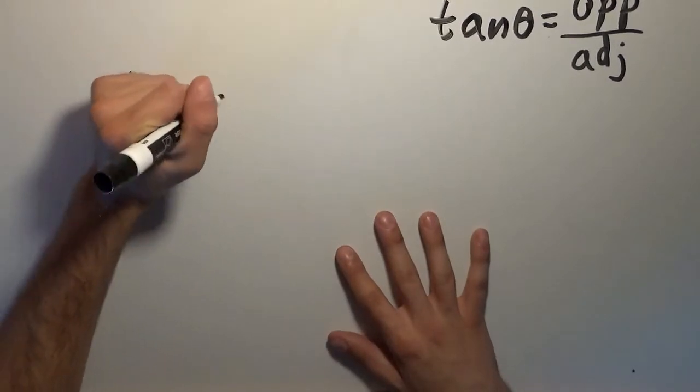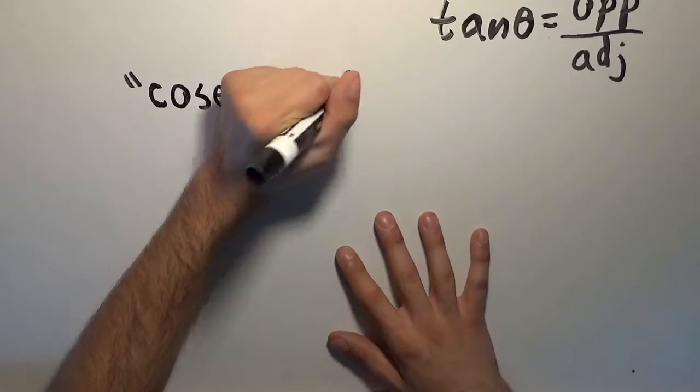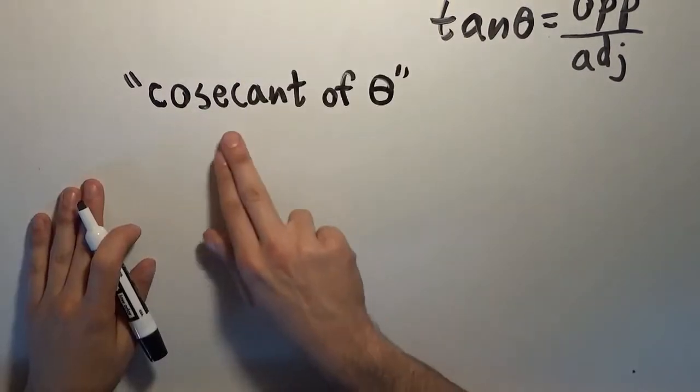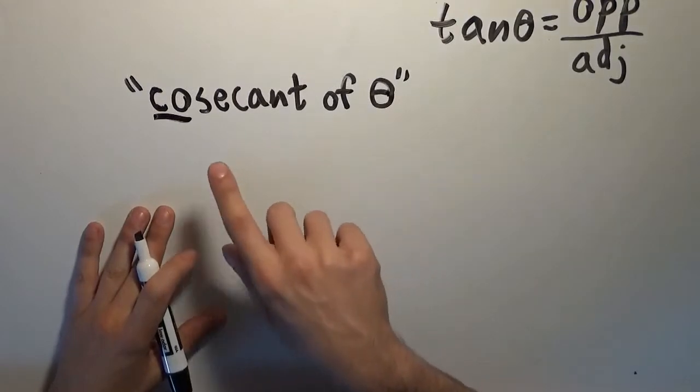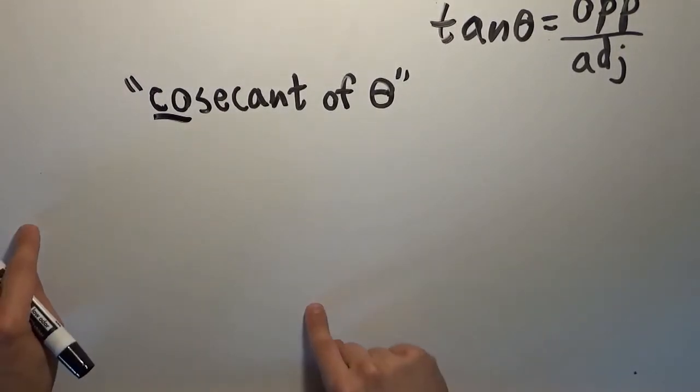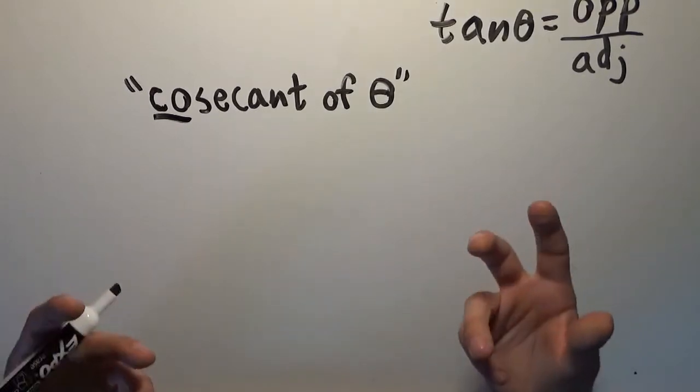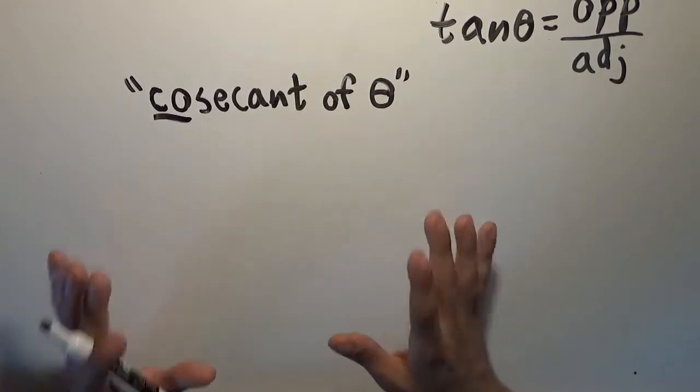We're going to call it the cosecant of theta. There will be a regular secant function, so I'm going to underline 'co' and emphasize that. And the secant function and the cosecant function have the same property that sine and cosine do. If you apply each of them to complementary angles, you get the same number. So understand that.